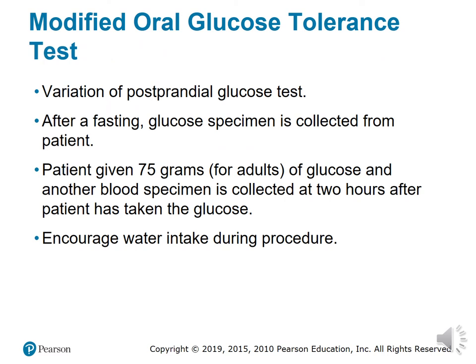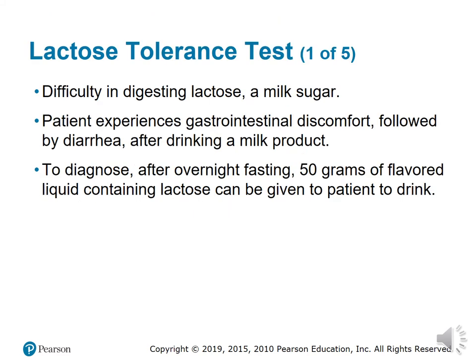For the modified oral glucose test, after a fasting glucose specimen is collected, the patient is given 75 grams of glucose and another blood specimen is collected two hours later. Water intake is encouraged during the procedure.